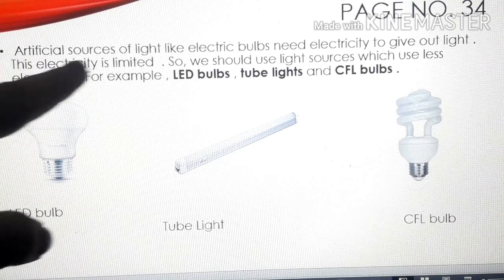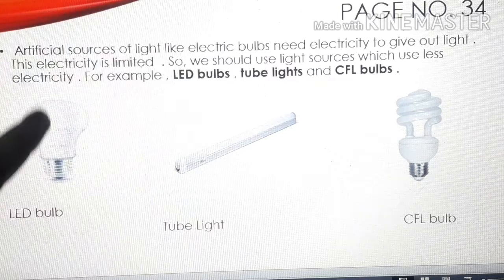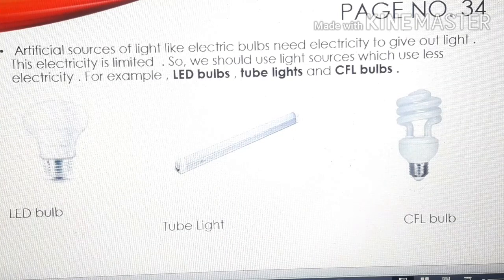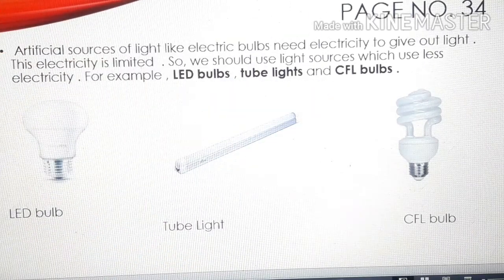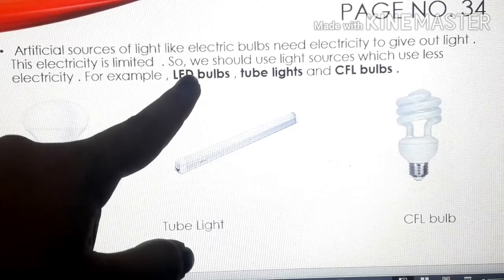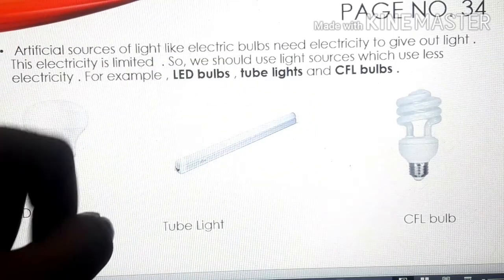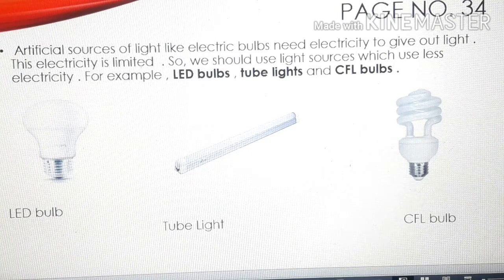Artificial sources like electric bulbs need electricity to give out light, and this electricity is limited. So we should use light sources that consume less electricity. We should use LED bulbs, tube lights, and CFL bulbs, as these consume less electricity. This is the second way we can save our electricity.